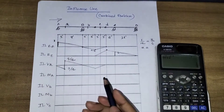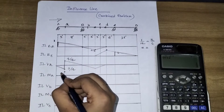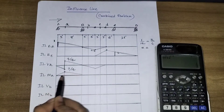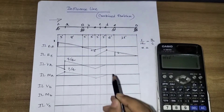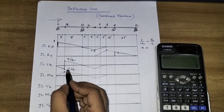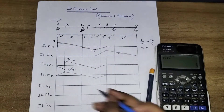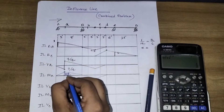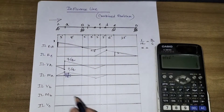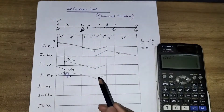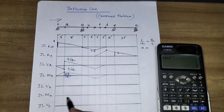Moment for A: A is the moment. It is a pin point, so the two-support moment is zero. For the ordinate at A, the calculation is 3 into 9 divided by 3 plus 9, which equals 3 into 9 divided by 12.